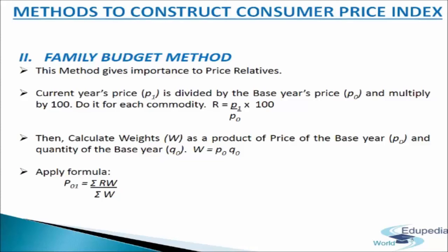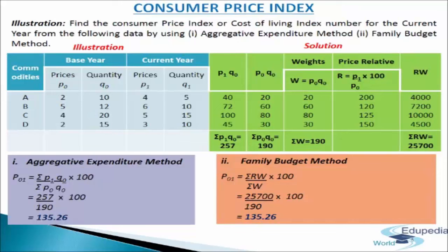Now we will understand both methods with the help of an illustration. We have to find the consumer price index, or cost of living index, for the current year from the given data using both the aggregative expenditure method and the family budget method. Data is given for commodities A, B, C, D — base period denoted by P₀ and Q₀, and current period by P₁ and Q₁. First we will use the aggregative expenditure method, for which we make a table with columns P₁Q₀ and P₀Q₀.